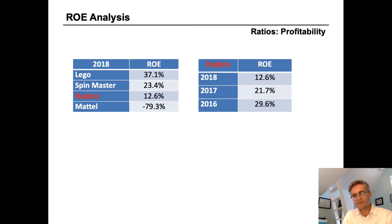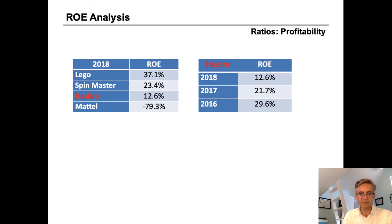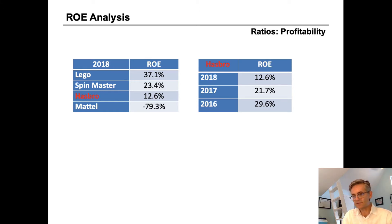On the right-hand side, we can see Hasbro's return on equity used to be very respectable. In 2016, it was over 30 percent, which would have put it just behind Lego, but it's been deteriorating over the last two years. In general, we like to see higher returns on equity than lower, and we like to see increasing returns on equity versus decreasing. In both cases here, Hasbro gives us cause for concern.